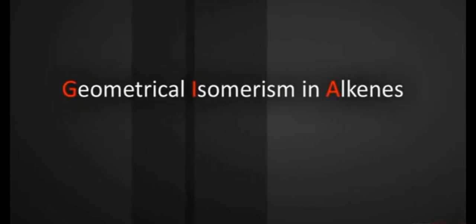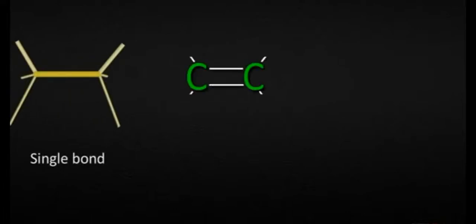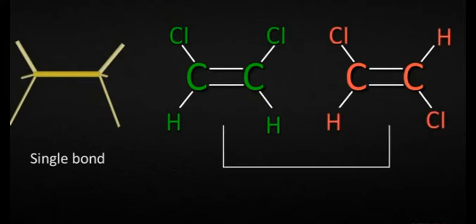Geometrical Isomerism in Alkenes. The geometrical isomerism is shown by alkenes, the compounds which have the same structural formula but differ in the spatial arrangement of atoms or groups of atoms about the double bond. These are called geometrical isomers.